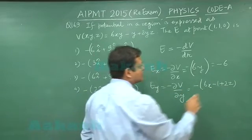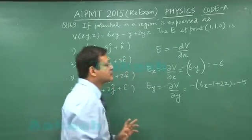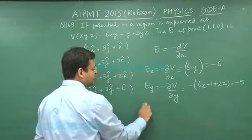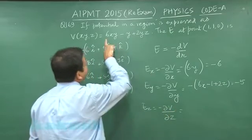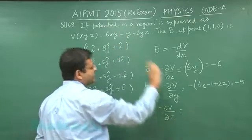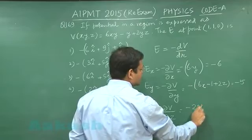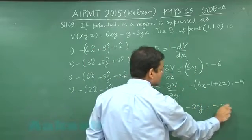So this is you can say minus 5 Newton per coulomb. And if you calculate Ez, that will be minus del V by del z partial derivative. This will be 0, this will be 0, only expression you will be having, that will be minus 2y. Y value has been given as 1, so this is minus 2.